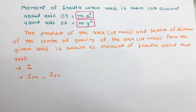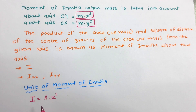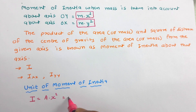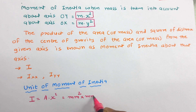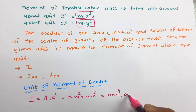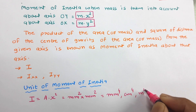Now let us see the unit of moment of inertia. The unit of area is millimeter squared and the unit of distance squared is also millimeter squared. Therefore, the unit of moment of inertia is millimeter raised to the power 4, or it can be centimeter raised to 4, or meter raised to 4.